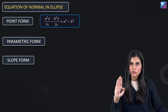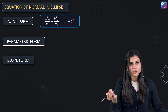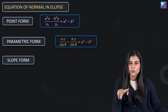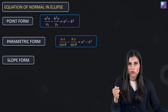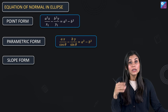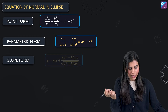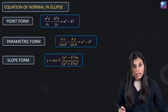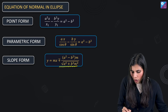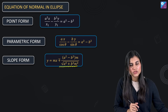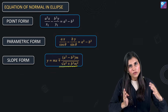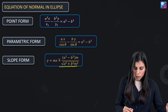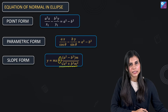Last for ellipse is the equation of normal. You already know how to write it in point form. For parametric form, substitute the parametric coordinates in place of x1, y1 in the point form equation. For slope form, the value of c is a bit complicated but important to remember. Just as there are two parallel tangents of the same slope for an ellipse, there are also two parallel normals of the same slope — one for the plus sign and one for the minus sign.